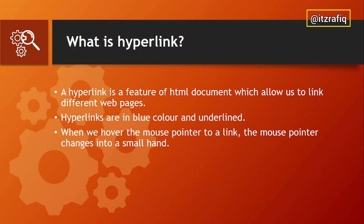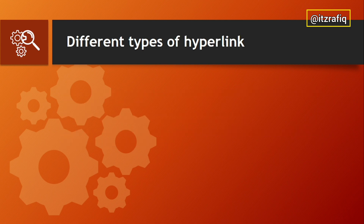When you hover the mouse pointer over a link, it changes from the normal arrow shape into a small pointing hand. Hover means to move the mouse cursor above the text or the link.